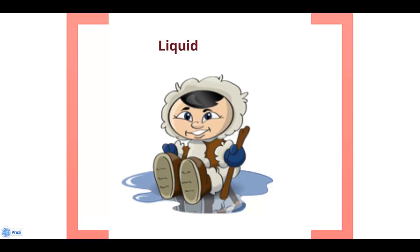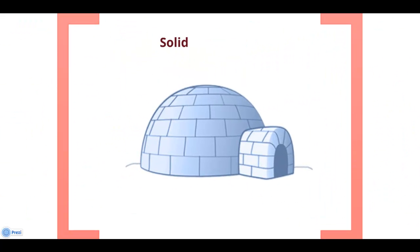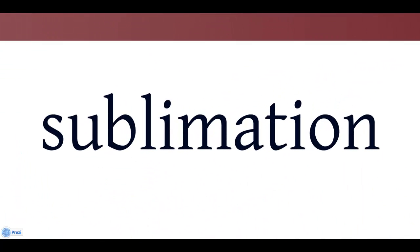Under certain conditions, substances can change between the states of solid and gas without going through the liquid state. Sublimation occurs when a solid gains enough energy to be converted directly into a gas.